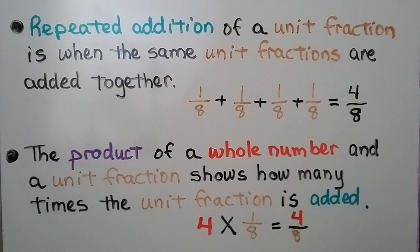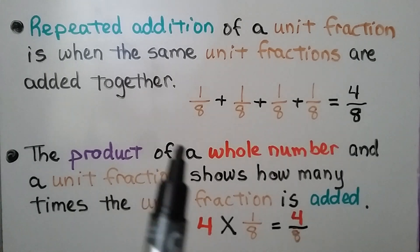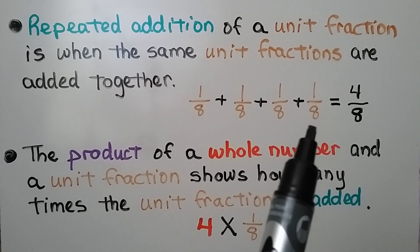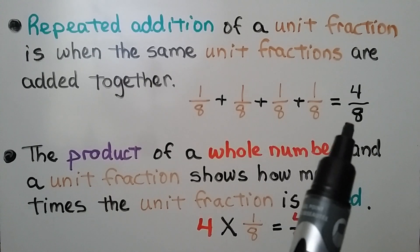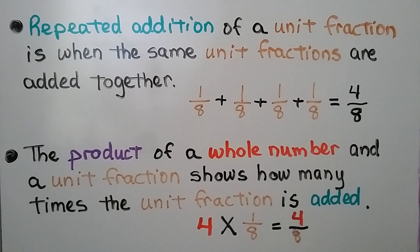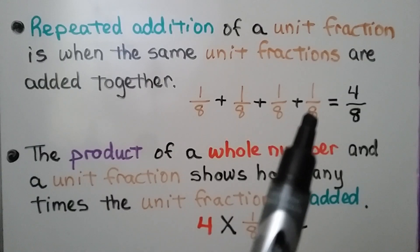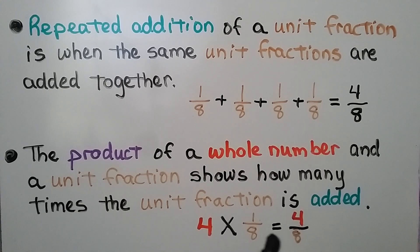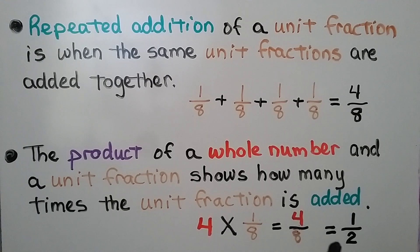Repeated addition of a unit fraction is when the same unit fractions are added together. We have 1/8 plus 1/8 plus 1/8 plus 1/8. The denominators are the same, so our sum is going to have 8 as a denominator, and we add the numerators: 1 plus 1 plus 1 plus 1. We have 4. And the product of a whole number and a unit fraction shows how many times the unit fraction is added. We have 4 times 1/8, equal to 4/8. And we can simplify 4/8 to be 1/2.